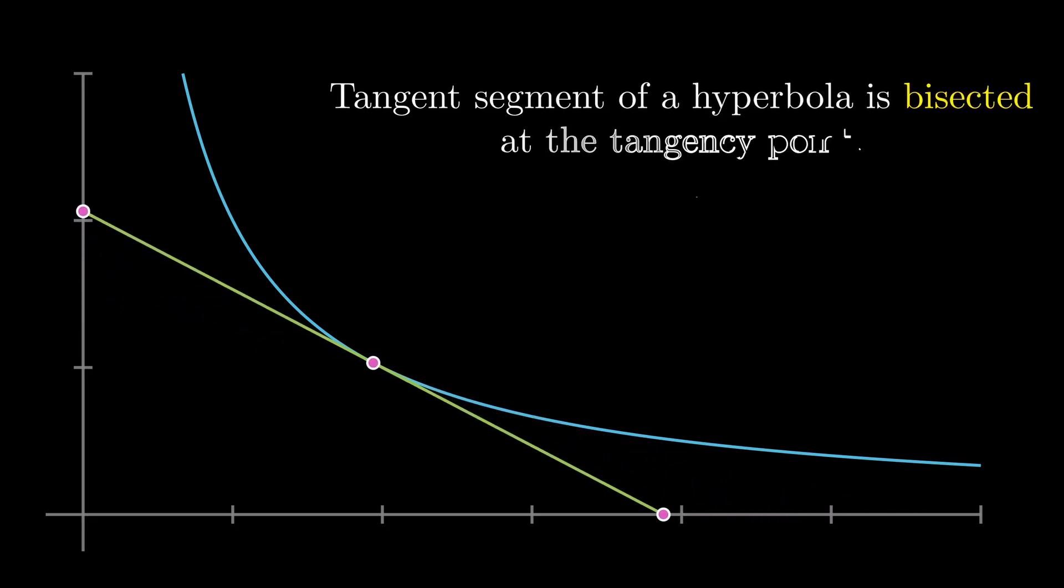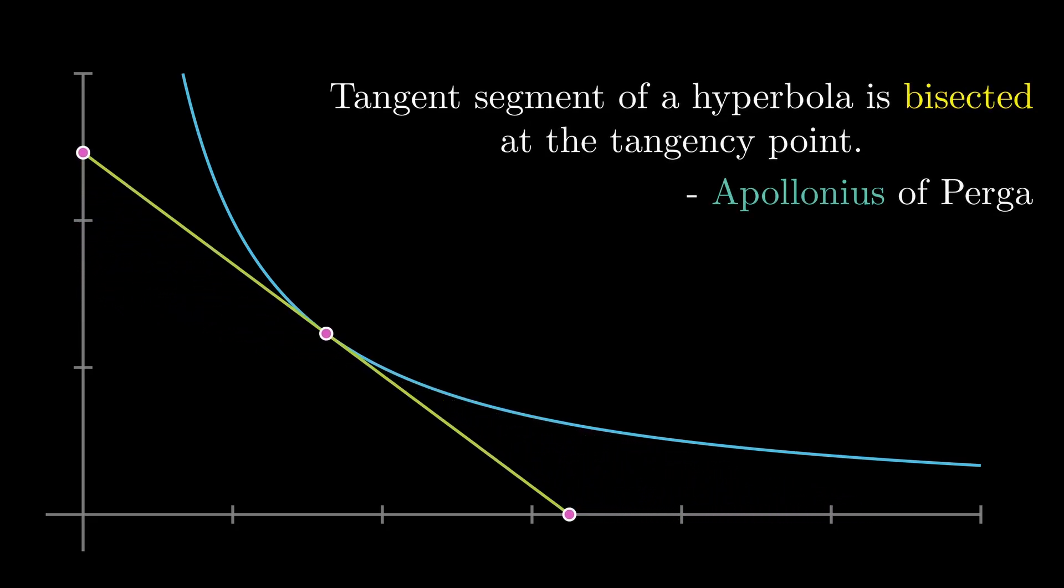It is known since the time of Apollonius that the tangential segment of a hyperbola caught between the asymptotes is bisected at the point of tangency. We will see why this is true in a moment, but for now let's stay on course. Given this proposition, we can draw a circle with the tangency point as the center and the segment as its diameter.